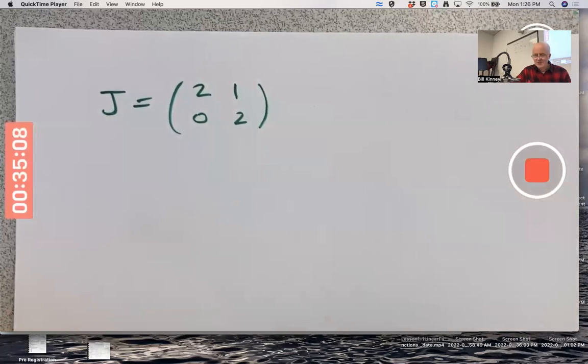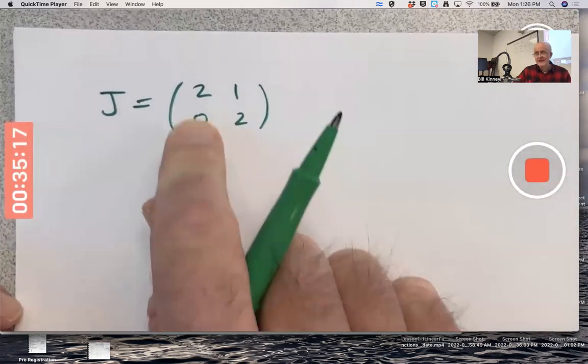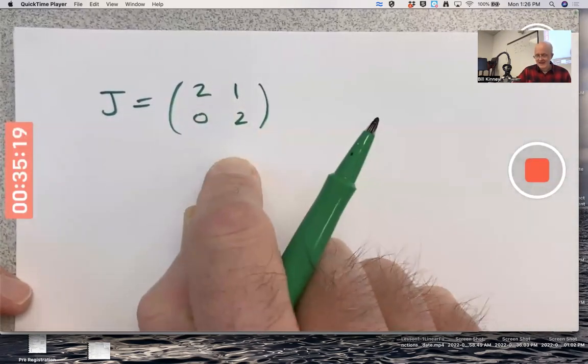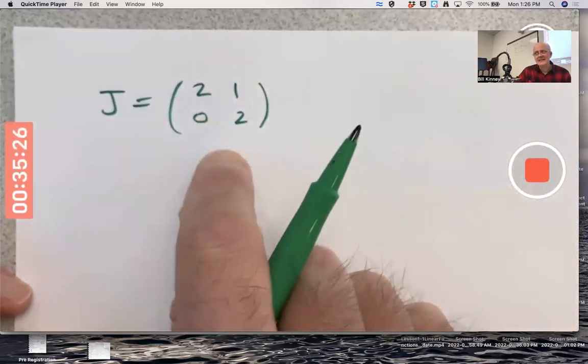A Jordan canonical form of a two by two matrix with a repeated eigenvalue is an upper triangular matrix with the eigenvalues along the main diagonal and one in the upper right corner. Such a matrix is not diagonalizable.